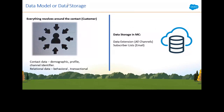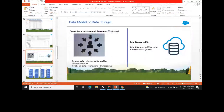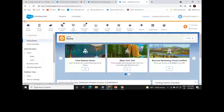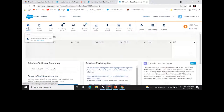There are two options for storing data in Marketing Cloud: data extensions and subscriber lists. Data extensions store data across all channels; subscriber lists store data specifically for email subscribers. From inside Email Studio, you can create both lists and data extensions.